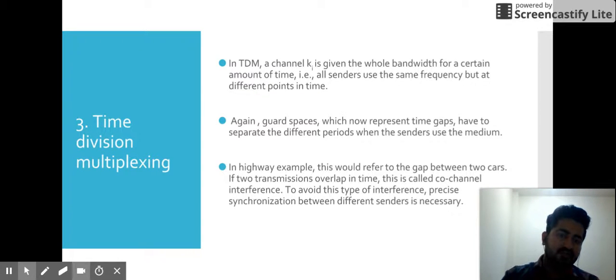If we try to understand this with a highway example, the guard spaces are the gap between two cars. If two transmissions overlap in time, this is called co-channel interference. To avoid this type of interference, precise synchronization between different senders is necessary.